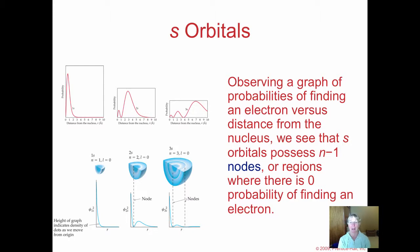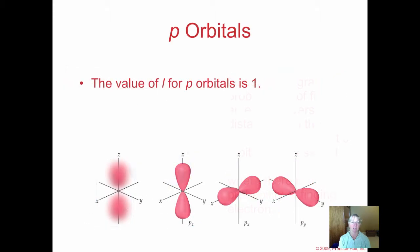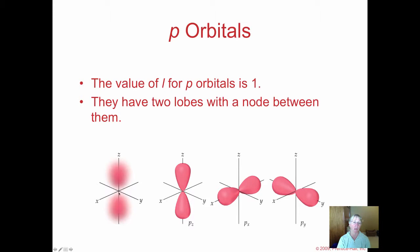Nodes are regions where there's zero probability of locating an electron. In p orbitals, here's our node right here. Electrons don't go into the nucleus, but we were cavalier about how we sketched them in beginning chemistry. The lobes emit out from the origin, but electrons are not going into the nucleus. That's where the node of the p orbital would be.